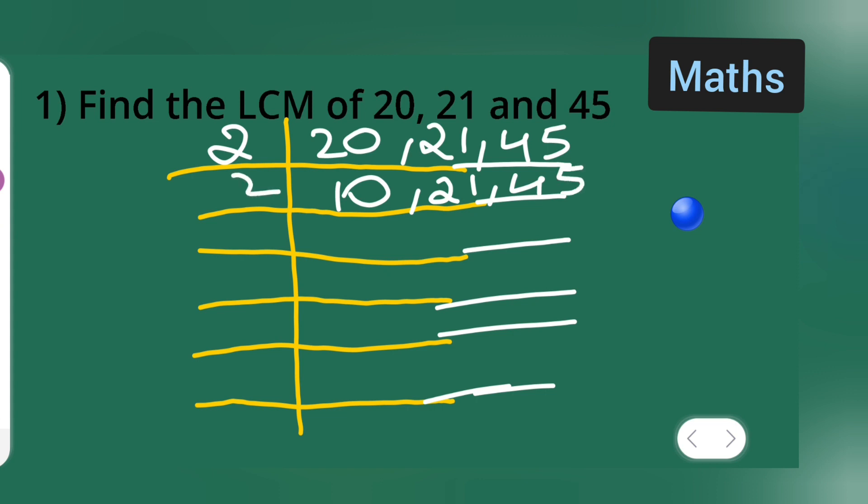Next 2, 5s are 10, 21 and 45. Keep it as it is.